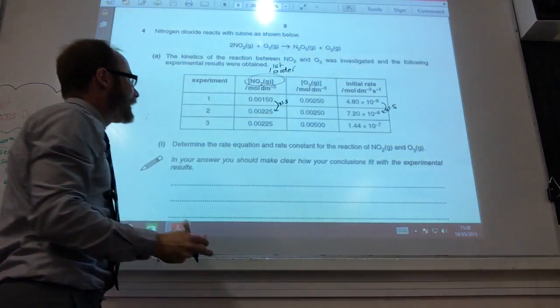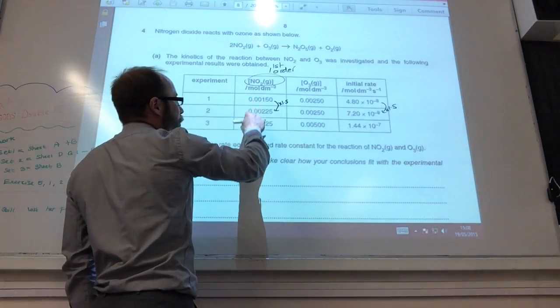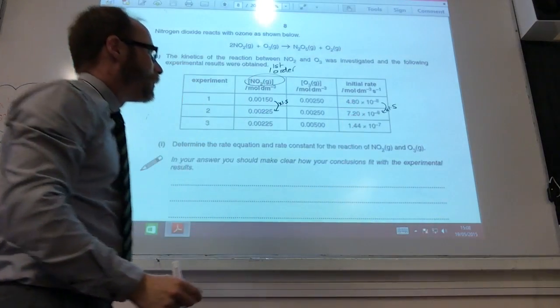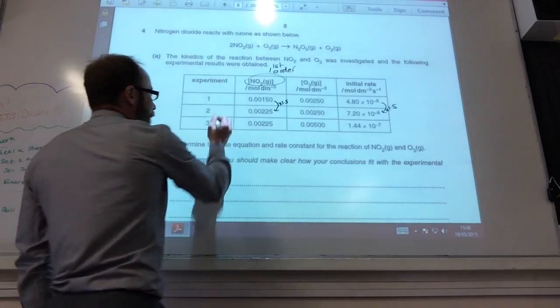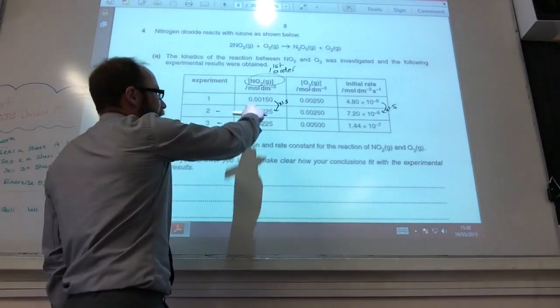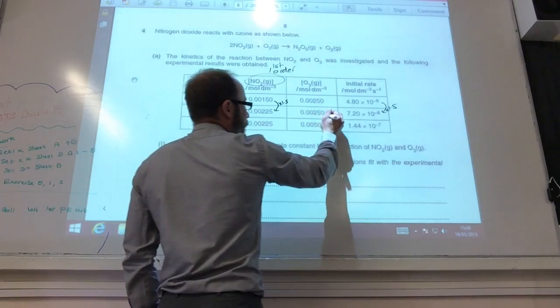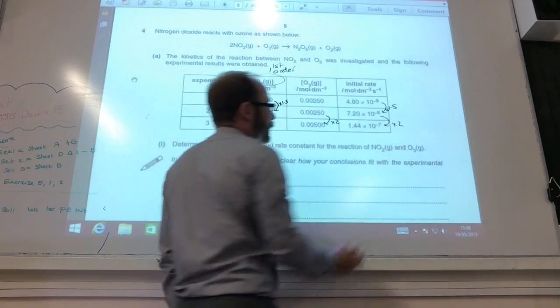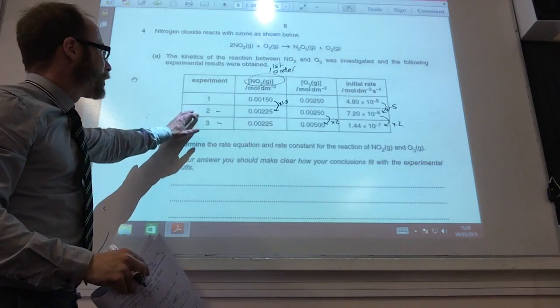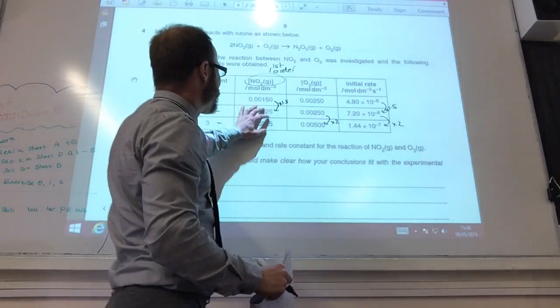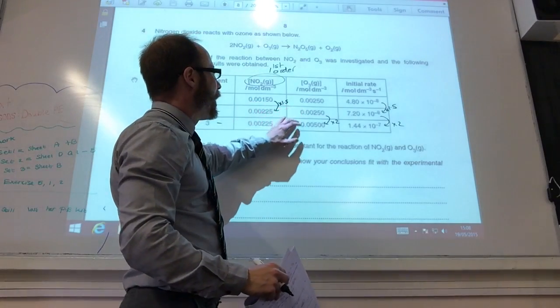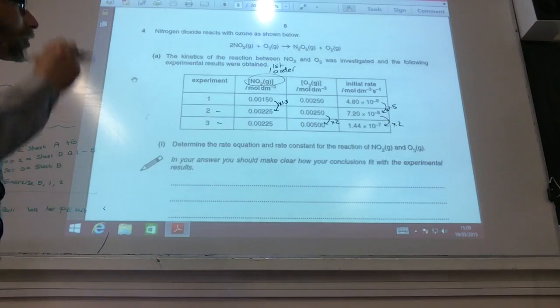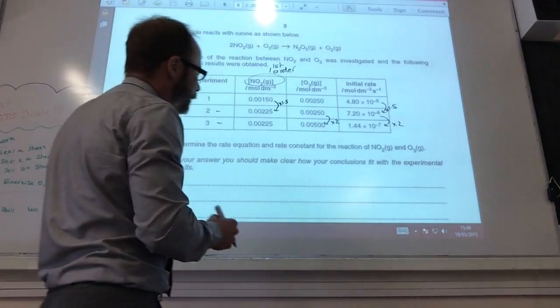And you can explain that from experiments 1 and 2, when the concentration of nitrogen dioxide is times by 1.5, the rate is times by 1.5. Therefore, it's first order. Now, from experiments 2 and 3, nitrogen dioxide stays the same, but you can see that I have times the concentration of ozone by 2, and I have also times the rate by 2. So, again, when you come to answers, you can say experiments 2 and 3 show me concentration of NO2 stays the same, ozone times by 2, rate times by 2, and therefore first order with respect to ozone as well.